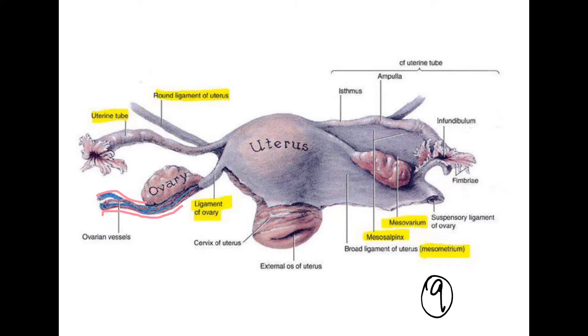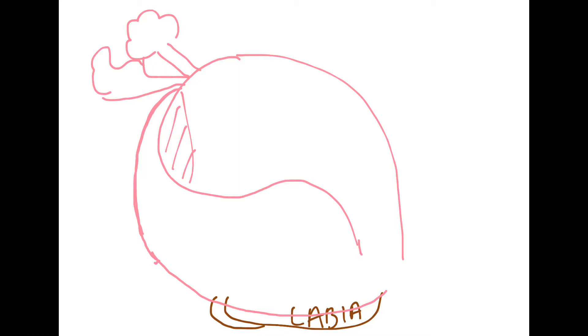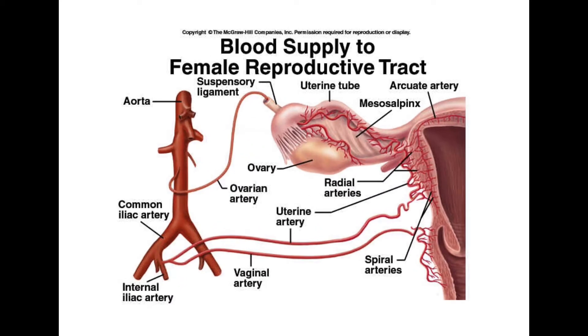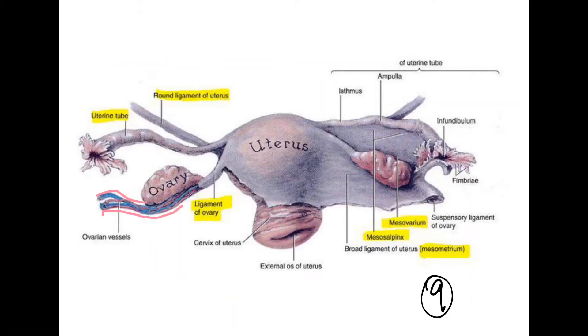Now where exactly are the ovarian vessels? The ovarian vessels are part of the abdominal aorta. The ovarian artery comes in for the suspensory ligament and supplies the ovary. The ovarian artery is a branch of the abdominal aorta. So this is the suspensory ligament and then the ovarian ligament, which attaches the ovaries to the uterus.